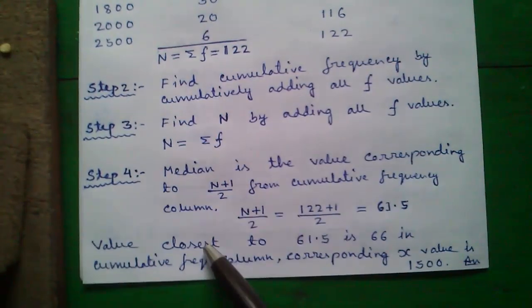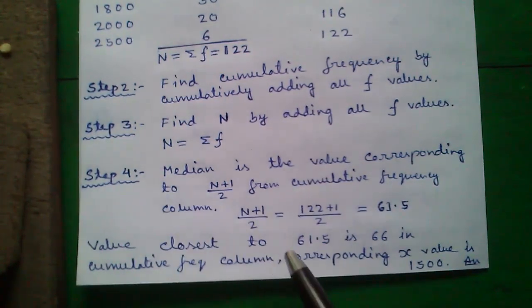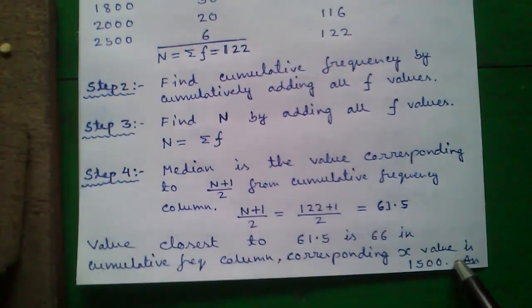Let's review it. Value closest to 61.5 is 66 in cumulative frequency column. And corresponding X value is 1500 which is our answer.